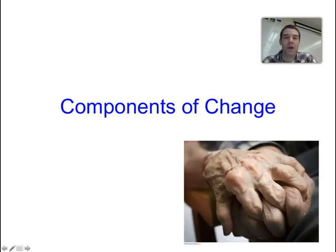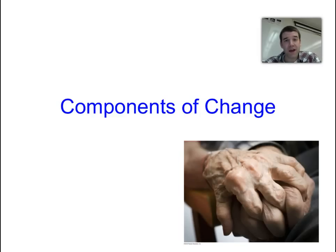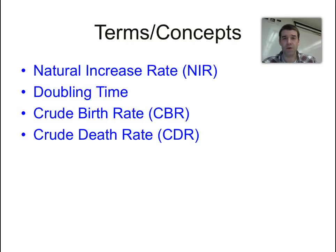Today we're going to be looking at population and components of change of population. As we rewind a little bit, we've talked about where population clusters are in the world and where we saw more densely populated areas. We looked at population pyramids today in class, and now we're going to look at some of the more detailed indicators that geographers would use to look at population changes. As people age and populations change over time, we see some characteristics that are helpful to do further analysis.